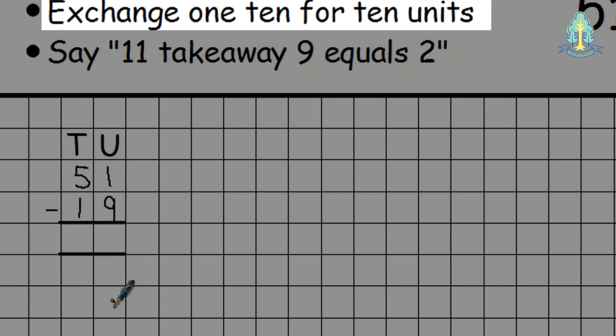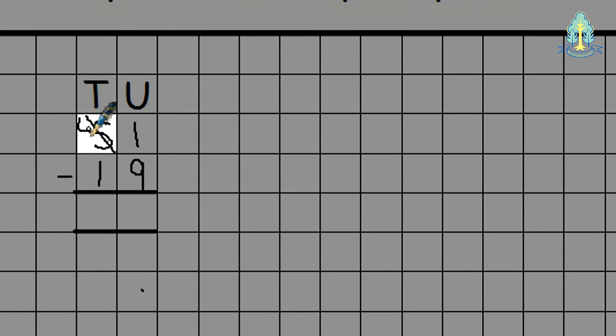They then exchange from the tens, exchanging one 10, leaving them 4, for 10 units, giving them 11 in the units column. 11 take away 9 is 2. 4 take away 1 is 3, giving them the answer of 32.